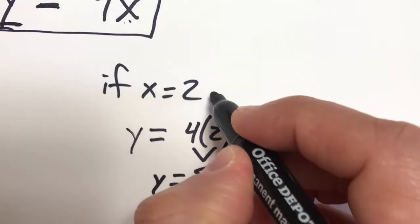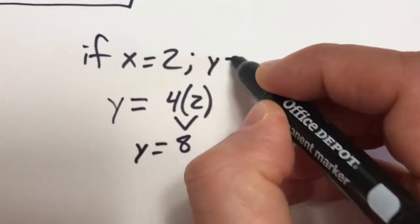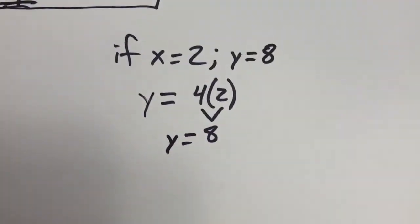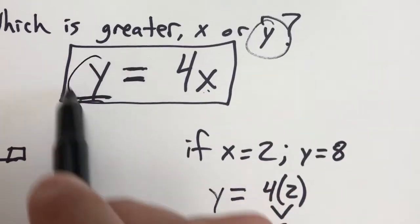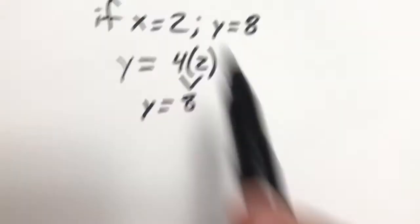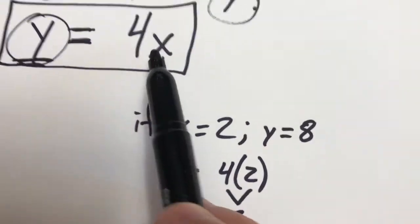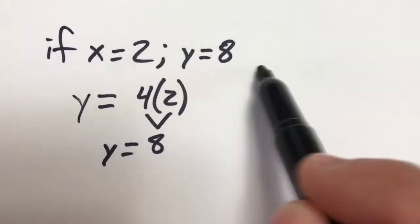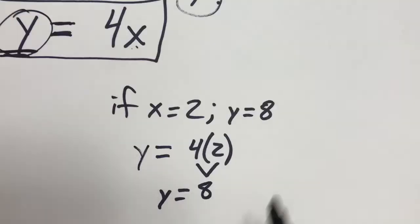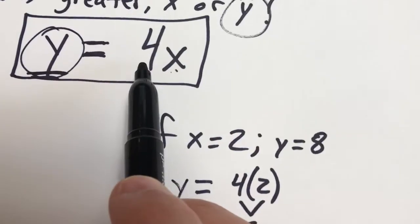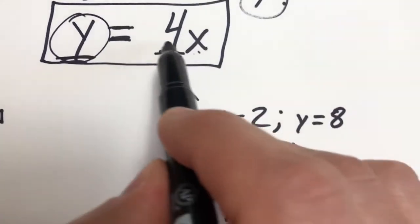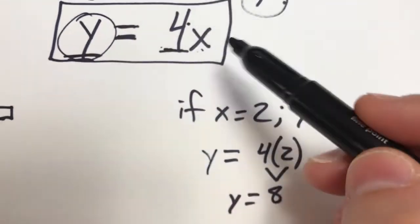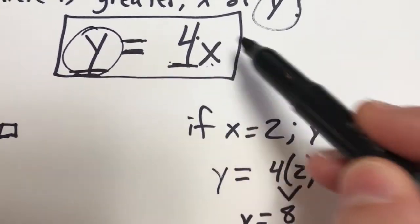So if x is 2, y is going to be equal to 8. So which is always going to be greater? Y is always going to be greater because it doesn't matter what you plug in for x. Y is always going to be more than that. Actually, y is always going to be 4 times more than x. Because this side of the equation is 4 multiplied by the value of whatever x is.